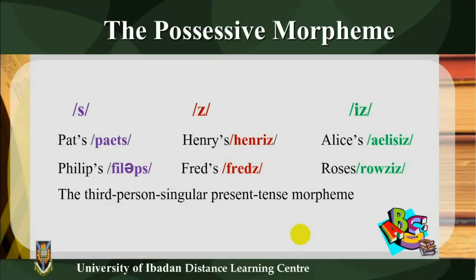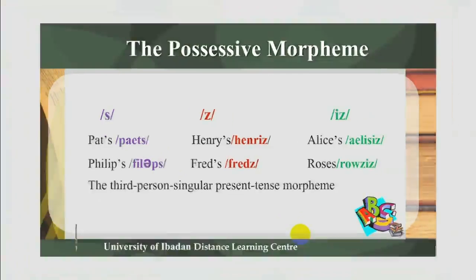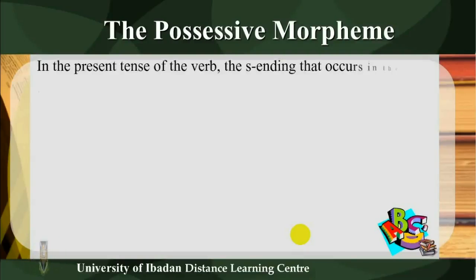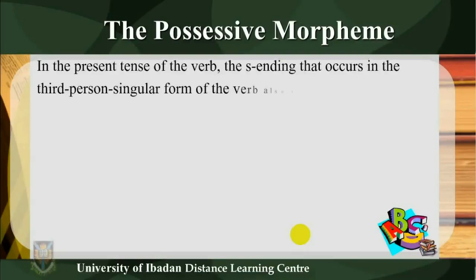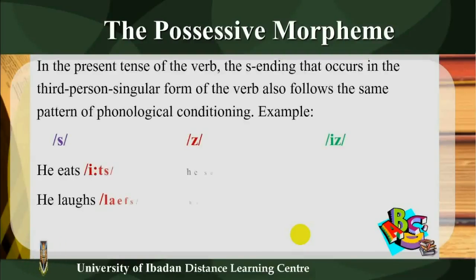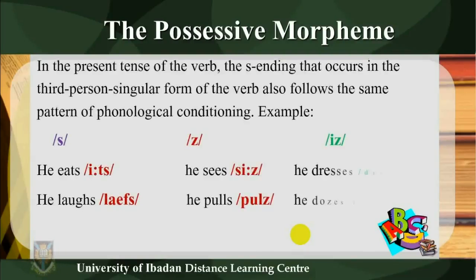The third person singular present tense morpheme: in the present tense of the verb, the S ending that occurs in the third person singular form of the verb also follows the same pattern of phonological conditioning.